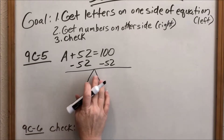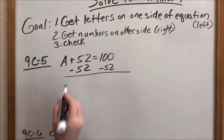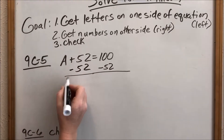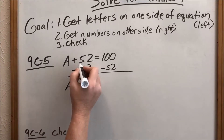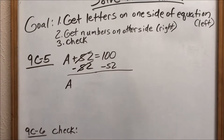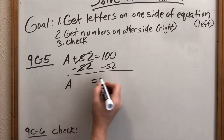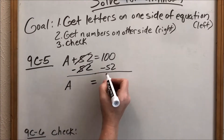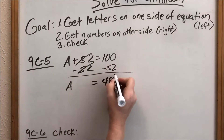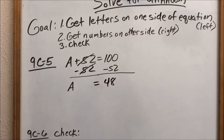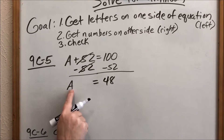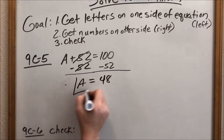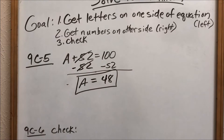So now to balance it, we subtract everything. We still have this A — that's like adding zero, so I still have A. The 52s cancel each other out. Then I have my equal sign, and 100 minus 52 should be 48. So A equals 48. That is my answer.